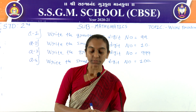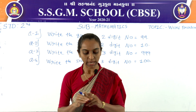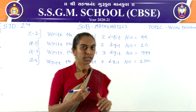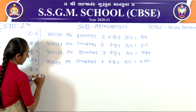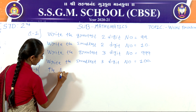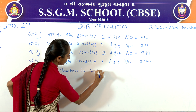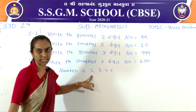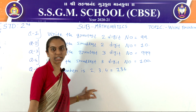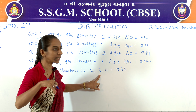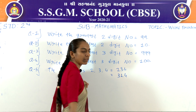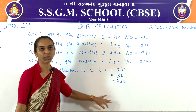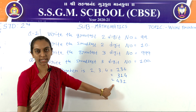Question number 5: write the smallest number of three digits using the digits 1, 3, and 4. Do not repeat any digit. To find the smallest number, rearrange the digits. Arrange the smallest number: 1, 3 and 4. The answer is 134. If 3 is first, the number is 314; if 4 is first, the number is 431. But the smallest number is 134.